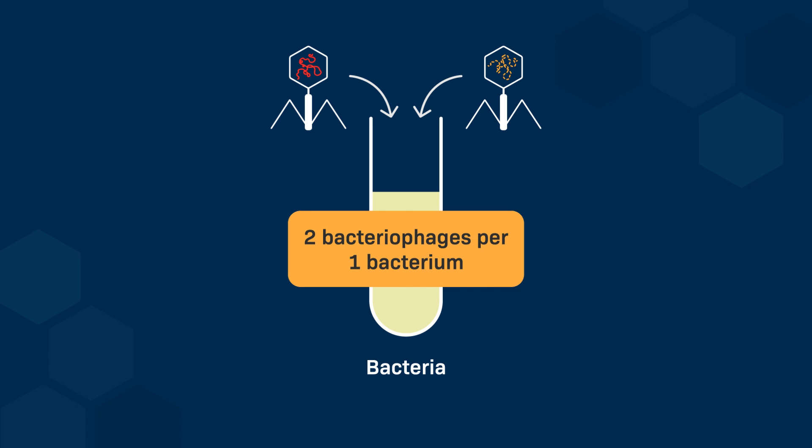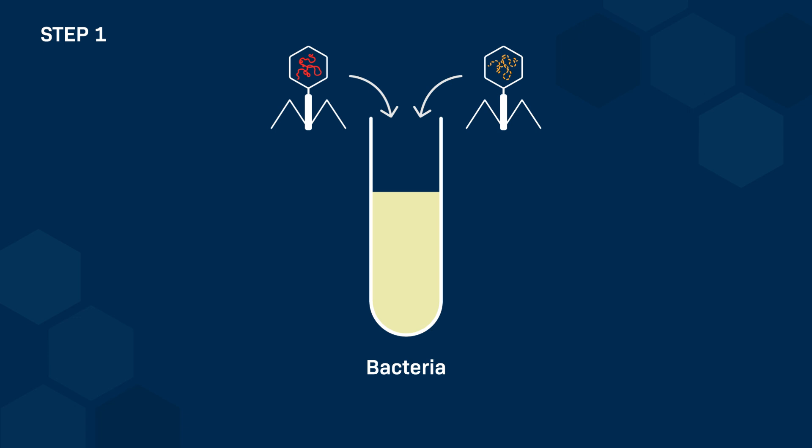We incubate the solution until the bacteria lyse and release the bacteriophage progeny. These bacteriophages, which contain both parental and recombinant progeny, are isolated. A bacteria solution is co-infected with two types of rapid lysis T4 bacteriophage mutants, called R21 and R22.